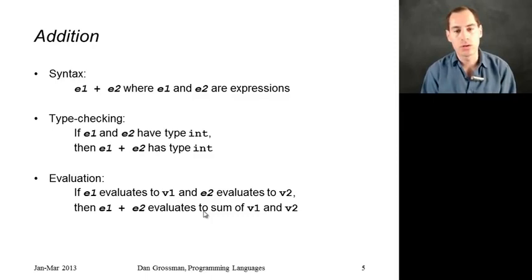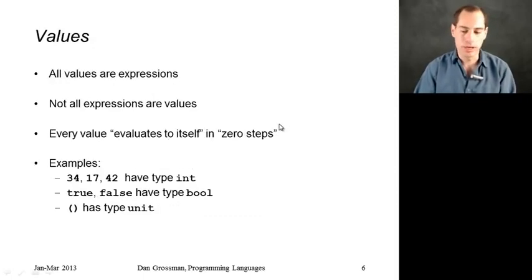And similarly for our evaluation rules, we're going to take those two sub expressions, e1 and e2, evaluate them to values. Let's call them v1 and v2, whatever they might be. And then our overall result will be the sum of v1 and v2. And again, thanks to type checking, I know v1 and v2 will be ints, so I know that it will always be possible to sum them. Alright, so that's addition. We all knew how addition worked.